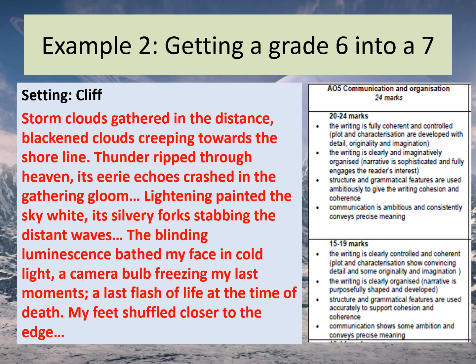Here's a detailed description of a cliff setting emphasising atmosphere: 'Storm clouds gathered in the distance, blackening clouds creeping towards the shoreline. Thunder ripped through heaven, its eerie echoes crashing in the gathering gloom.' Alliteration is used twice in one sentence. I might request extended similes or extended metaphors to be added here, using the higher-level descriptive effects to really enhance this response.